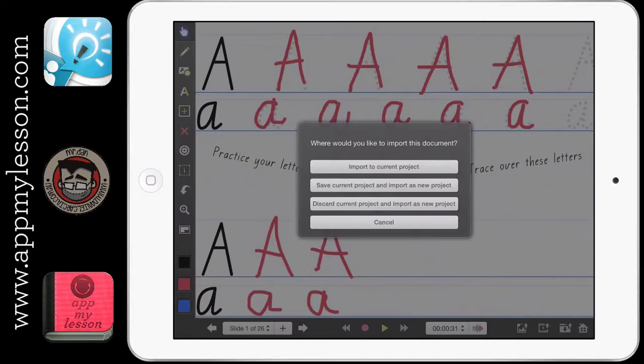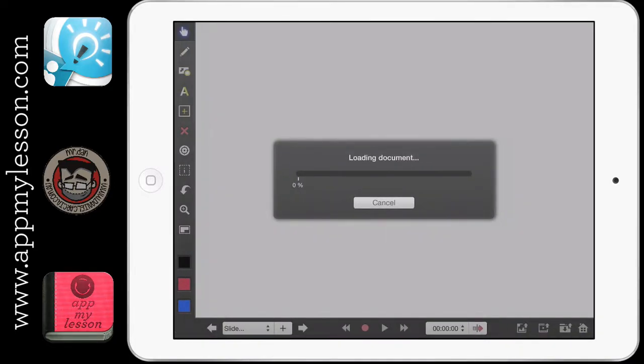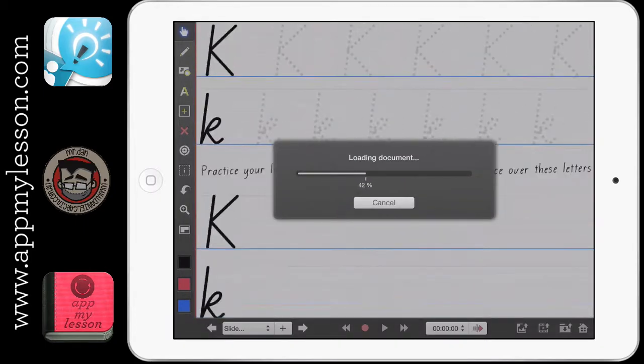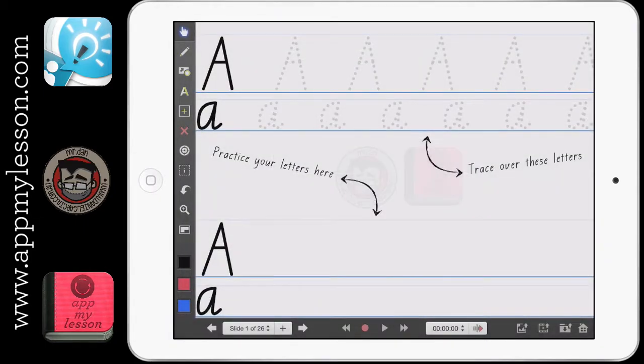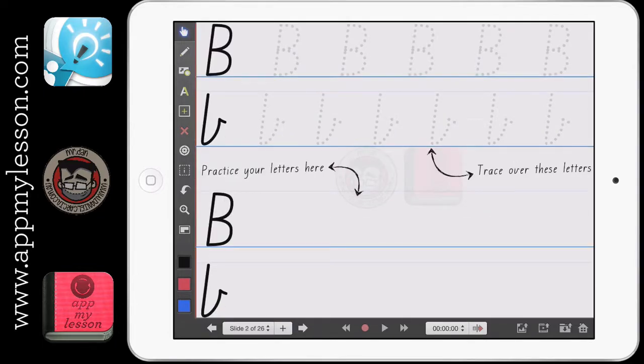I'm going to say discard and create a new project. And that's what it'll do. It's going to import that PDF and it's going to see it's got 26 slides and it's going to make them into 26 slides. And down the bottom, I've got my 26 slides that I can cycle between.